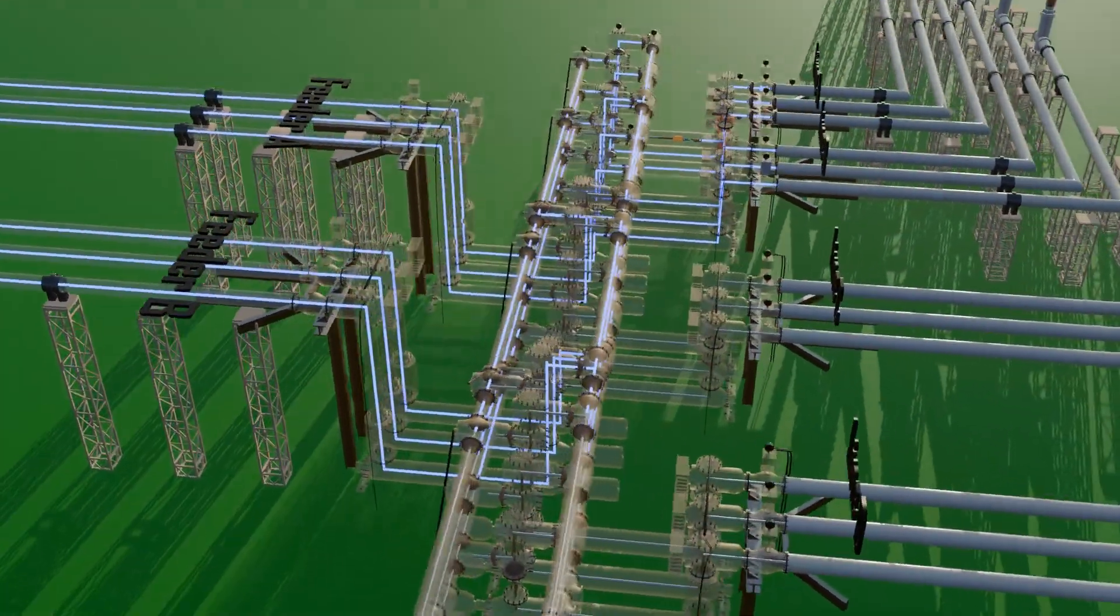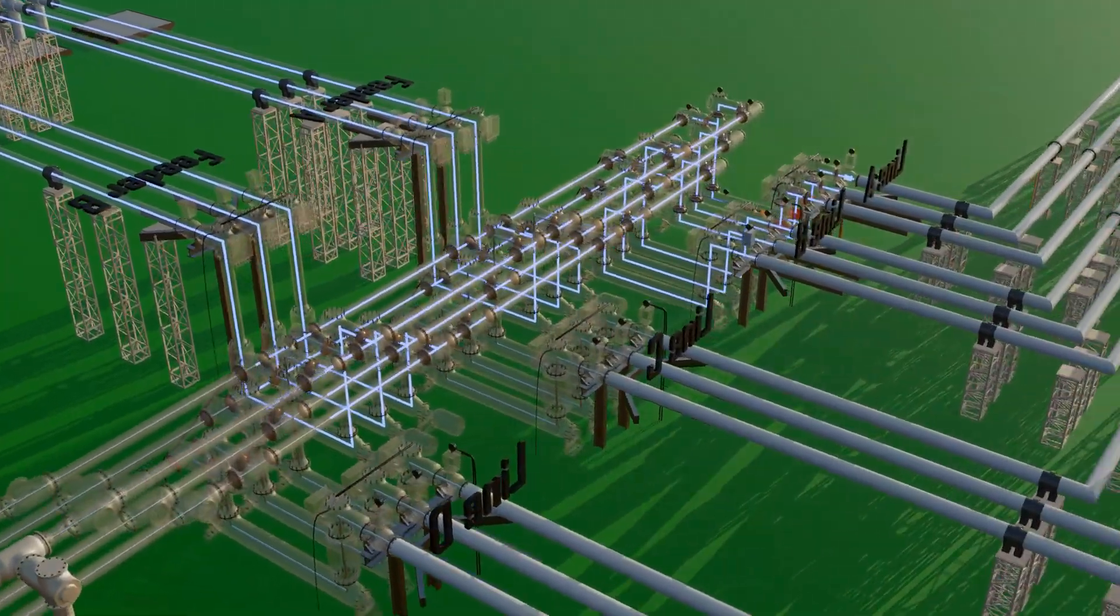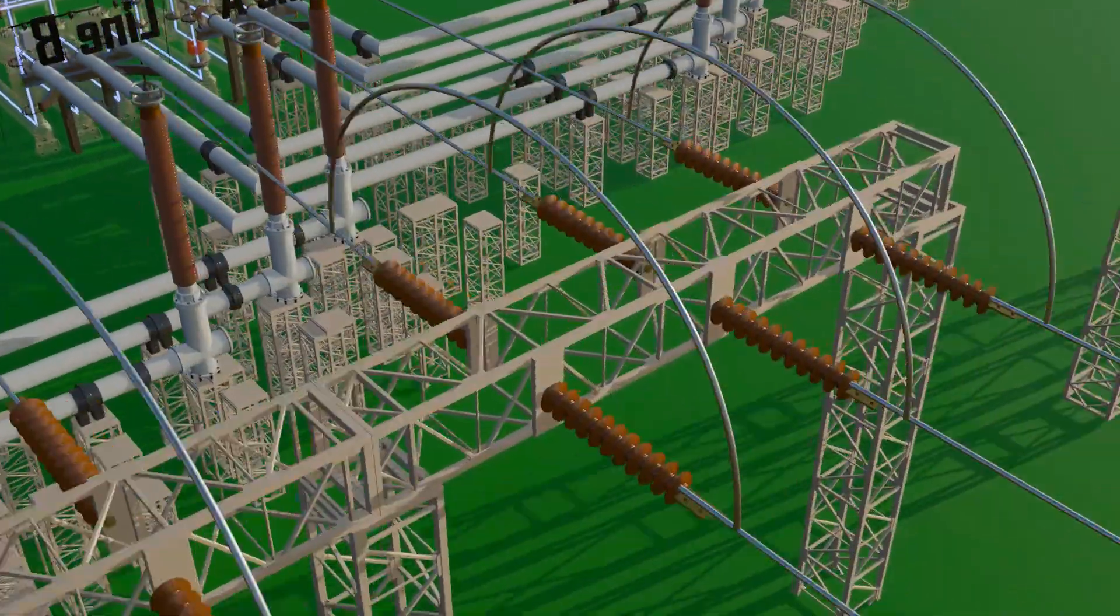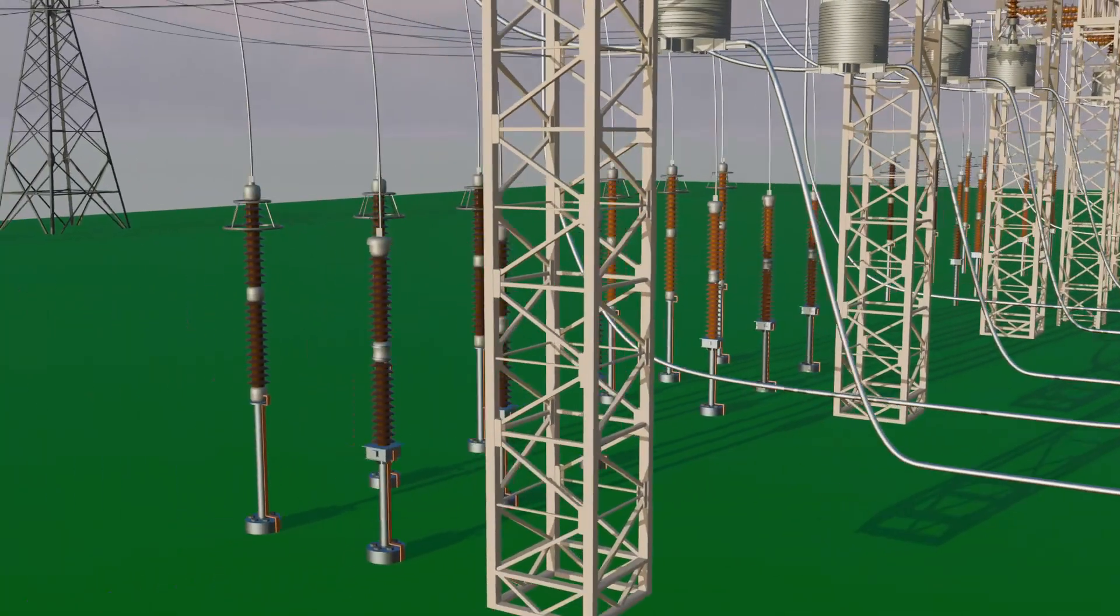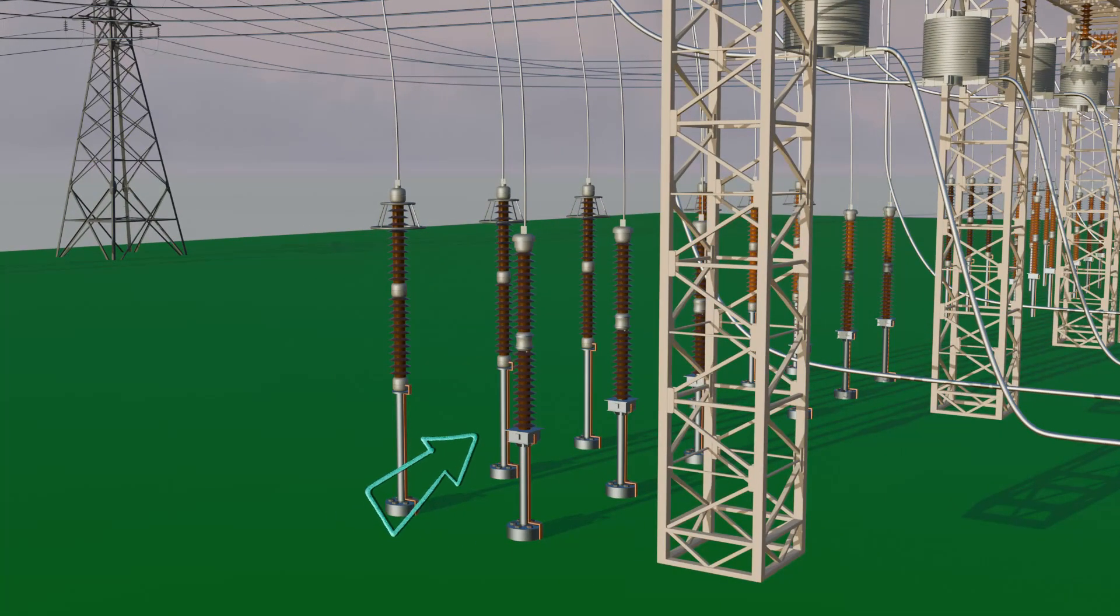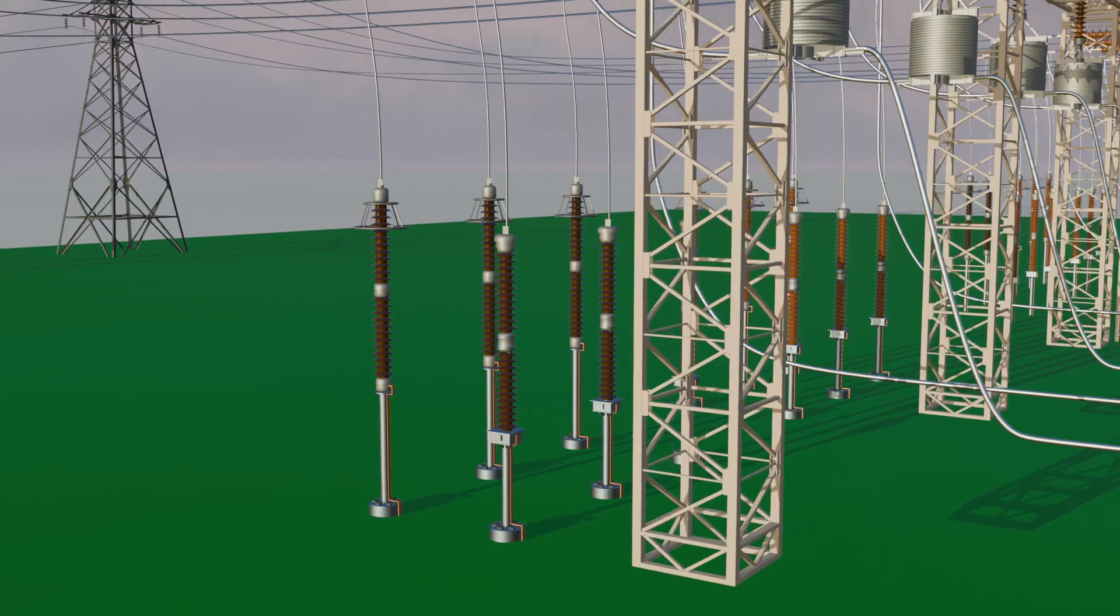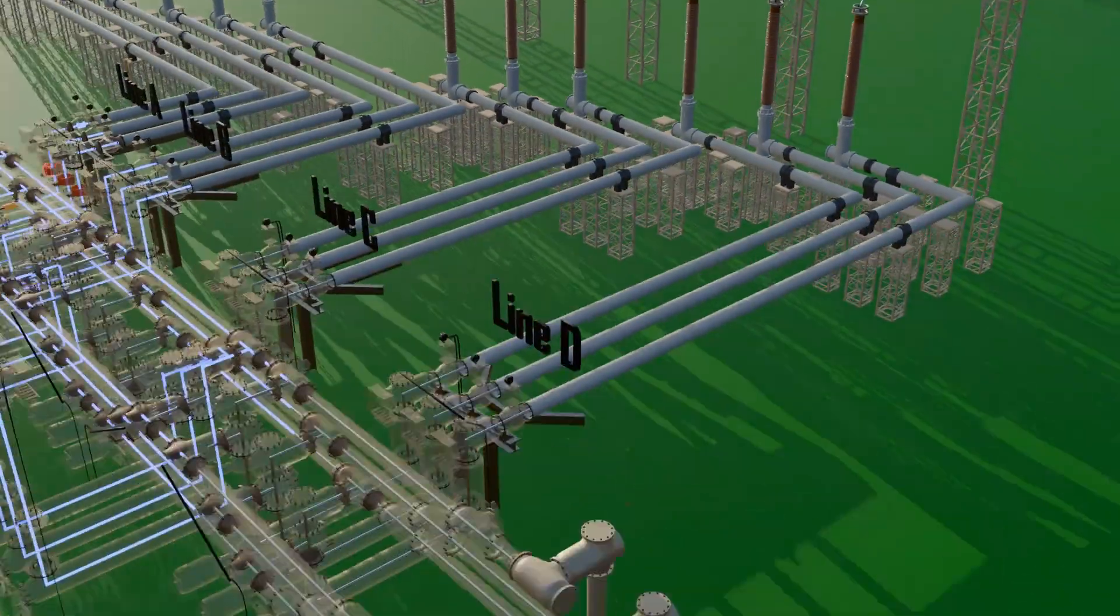One important point: we saw that after the lightning arrestor, a CVT is used to measure voltage. But suppose there is not enough space to install the CVT outside. In that case, a CVT can be installed at the far end of main bus 1 or main bus 2 inside the GIS to measure bus voltage.